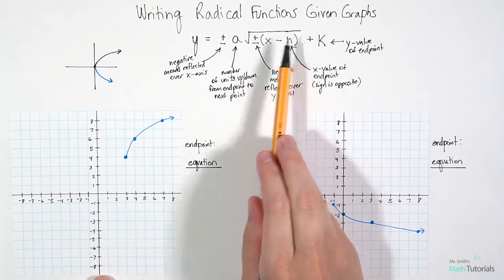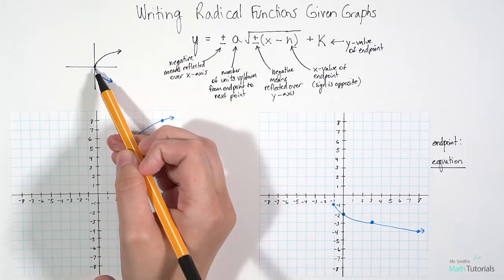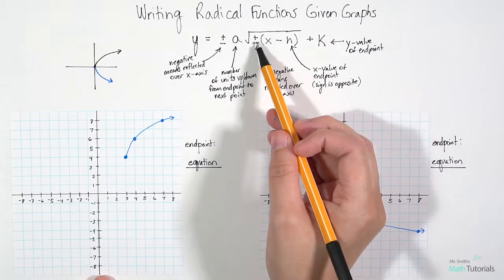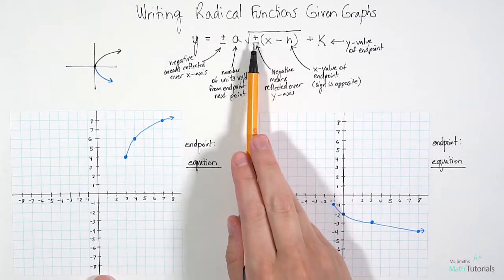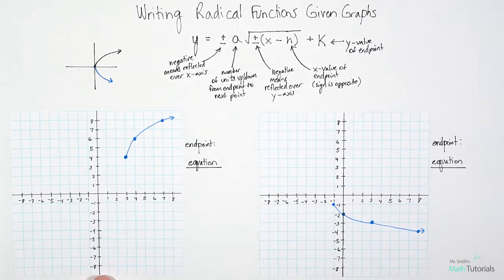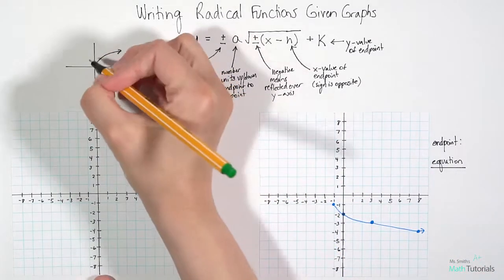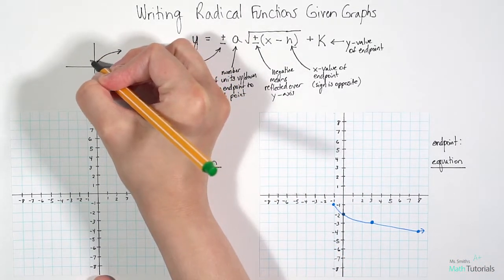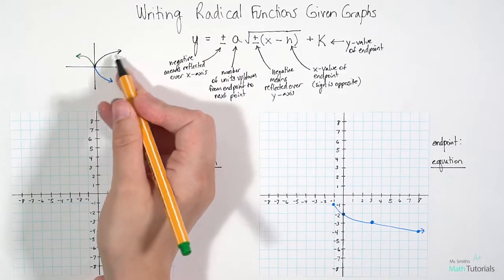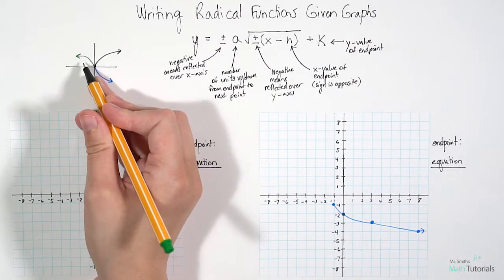Underneath the radical, we have either a positive — which we wouldn't see, it would just be blank — or we have a negative. A positive means no reflection over the y-axis, but a negative means we are reflecting over the y-axis. So if this one only is negative, that would be reflecting over the y-axis like this, giving us the green graph.